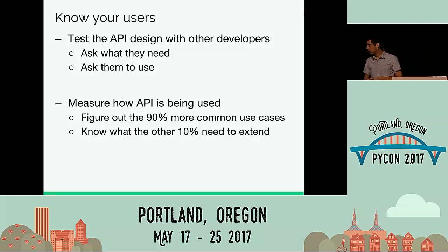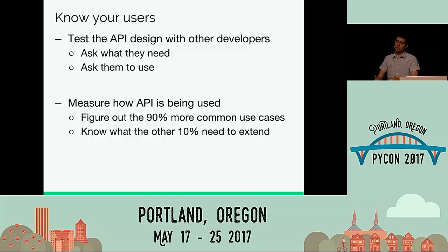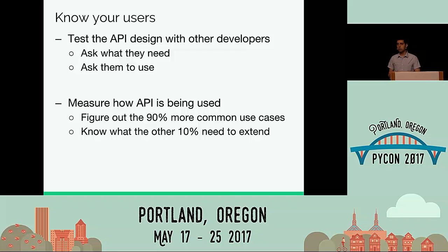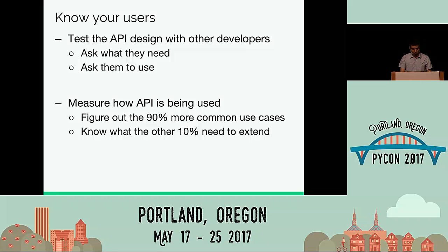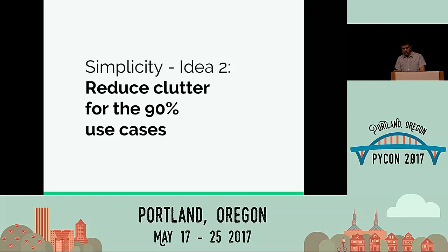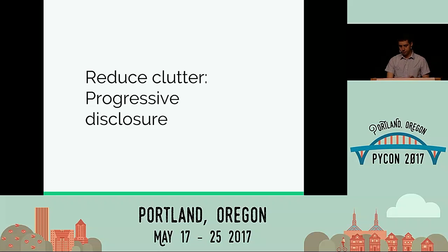Another thing we must do is know our users. To do that, we need to get people involved in API design — ask developers what they need, share the problem we're trying to solve, ask co-workers and random people on the internet in chat rooms or forums to test your API. Then you figure out what the 90% use cases are, and also know the 10% that won't be so easy but can be handled with some flexibility.